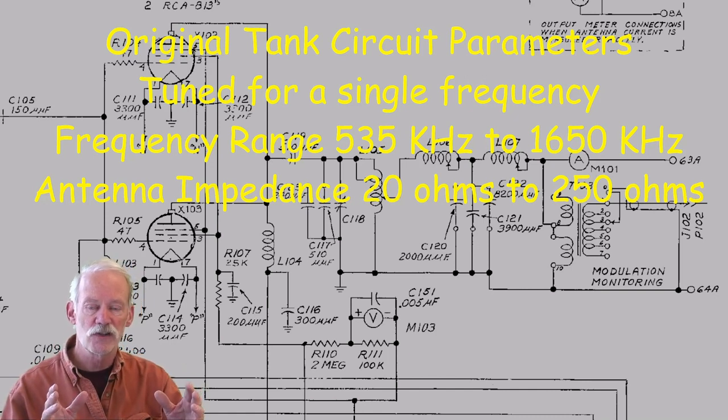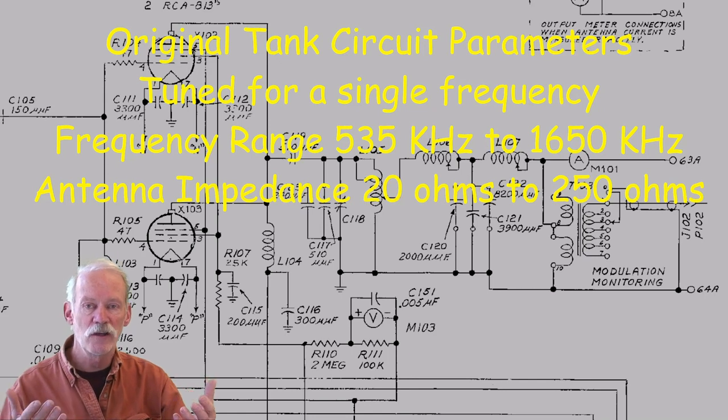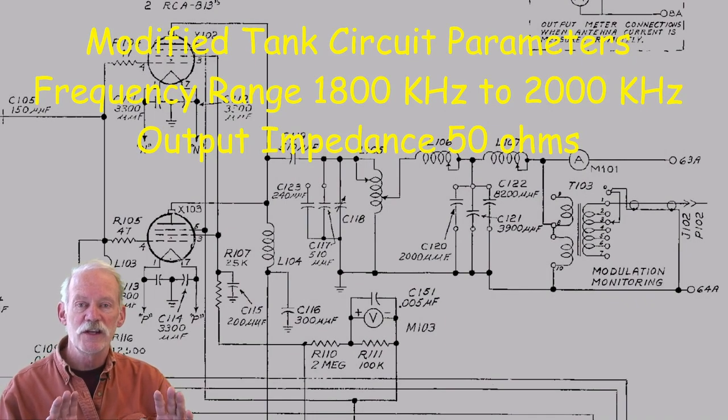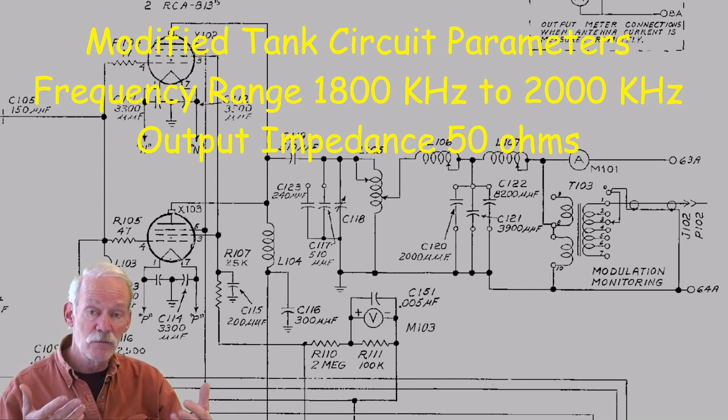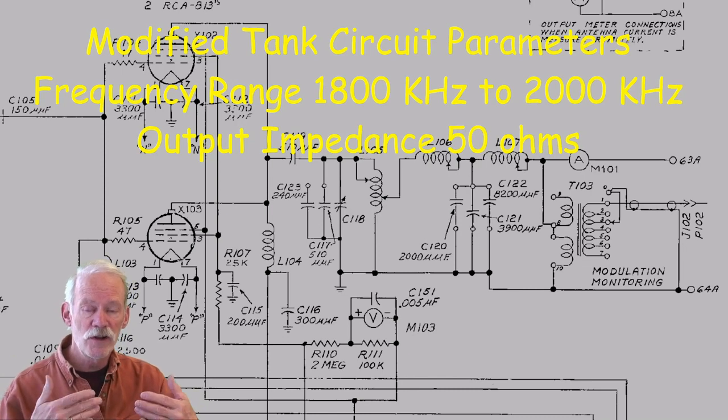The original parameters for this transmitter was that it would operate on a single frequency in a range between 535 kHz and 1650 kHz, the extent of the AM broadcast band at that time, but it would drive an antenna impedance anywhere from 20 ohms to 250 ohms. But these aren't the conditions that we run across on the 160-meter amateur band. The 160-meter amateur band is from 1,800 kHz to 2,000 kHz, and I'm going to be running into an output impedance of 50 ohms. So the original output network wasn't really suitable for my use, so I made some changes.